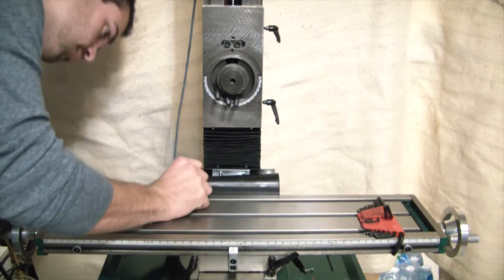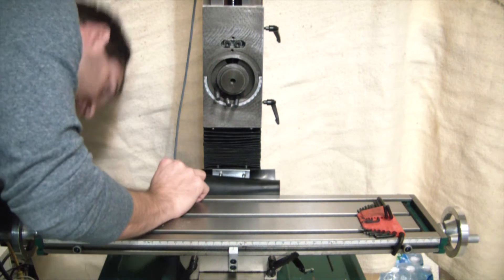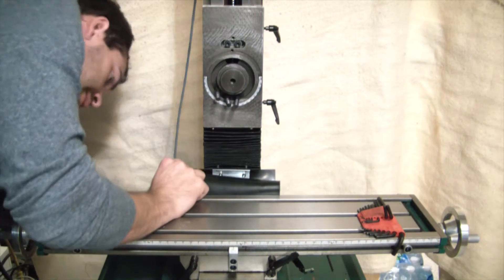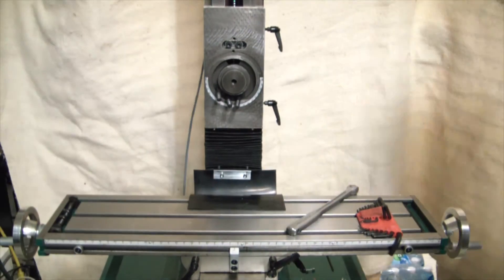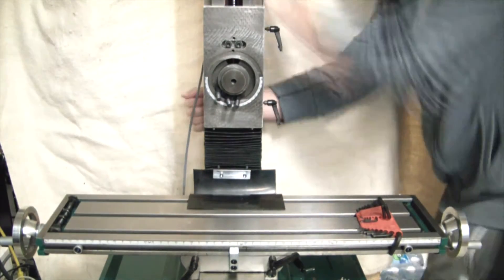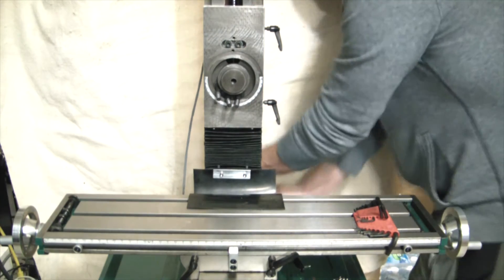The first step here was just to remove the chip cover or saddle cover, whatever that is. Pretty easy, just two bolts. You don't have to remove the back ones.